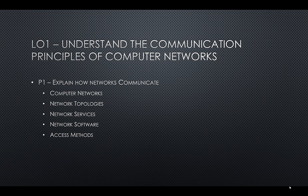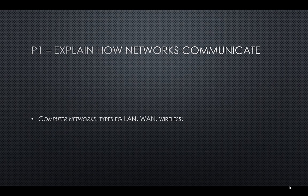This has been broken down quite nicely into computer networks, network topologies, network services, network software, and access methods. It could sound quite daunting, but we're going to break these down and take a look at exactly what you need to provide for your assignment. The first thing we're going to look at is computer networks — probably the simplest part of this criteria. Basically, you need to be explaining a LAN (local area network), a WAN (wide area network), and also wireless networks. It may be useful to include diagrams to help you explain each.